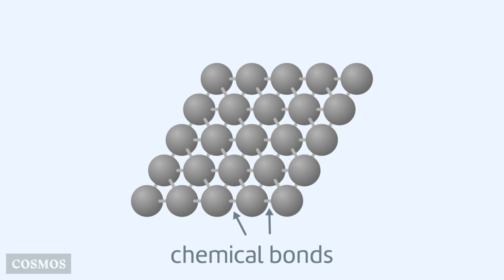Because each atom is chemically bonded with its neighbours, the atoms in a lattice can't move around very much. This means they tend to form solids.